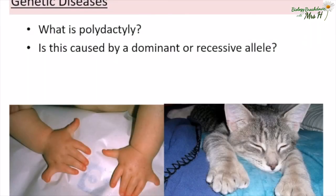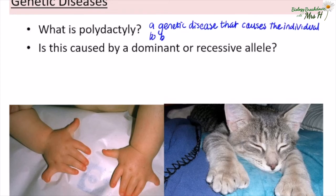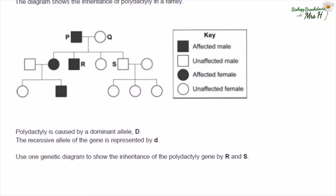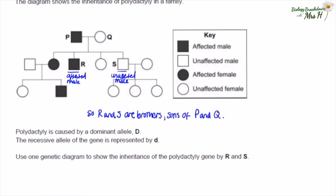Some genetic diseases can be caused by a dominant allele, such as polydactyly, which causes individuals to be born with extra fingers or toes. You need to be prepared to do crosses with a focus on the dominant allele. The diagram shows the inheritance of polydactyly in a family. Polydactyly is caused by a dominant allele D, and the recessive allele is d. Use one genetic diagram to show the inheritance using individuals R and S. R is an affected male and S is an unaffected male — they are brothers, sons of P and Q.